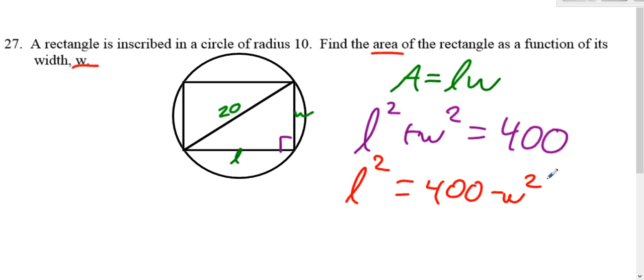Subtract W squared from both sides. L squared, so square root both sides. We don't need to worry about plus or minus for this, because length can only be positive. So we're only going to take the positive square root.